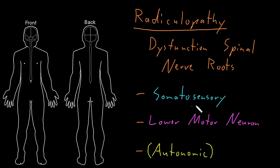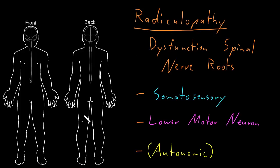One particular somatosensory abnormality tends to be very prominent with radiculopathy, and that's the somatosensory symptom of pain. There is often a lot of pain with radiculopathy, and the pain is fairly characteristic, because it often starts from the area of the spine where the spinal nerve roots are dysfunctional, and then it rapidly radiates down the territory of that spinal nerve root. Whatever skin gets somatosensory innervation from those spinal nerve roots, that pain often shoots down that territory — we call this radicular pain, because it's so characteristic of dysfunction of the spinal nerve roots.